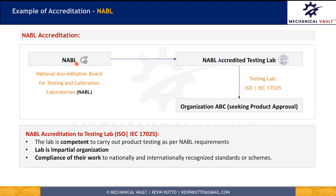NABL — the National Accreditation Board for Testing and Calibration Laboratories — could grant accreditation to product testing labs upon confirming three requirements. The first requirement is that the lab is competent to carry out product testing and approval as per NABL requirements. The second requirement is that the lab is an impartial organization, meaning it will not be influenced by the company seeking product approval.